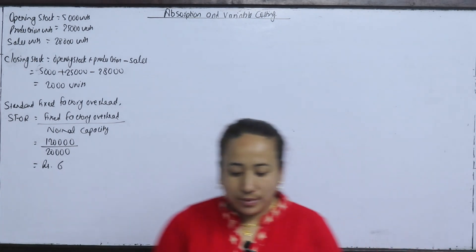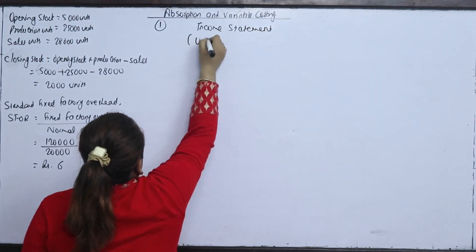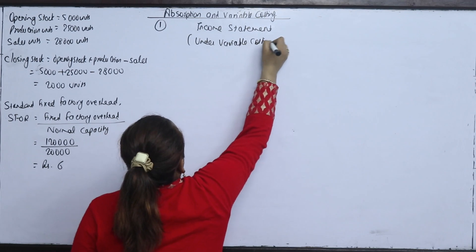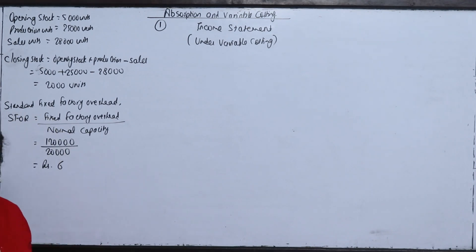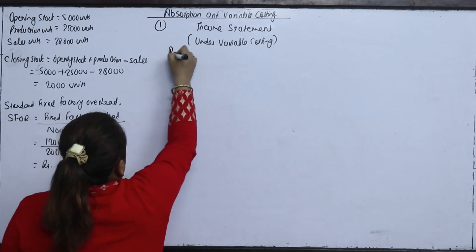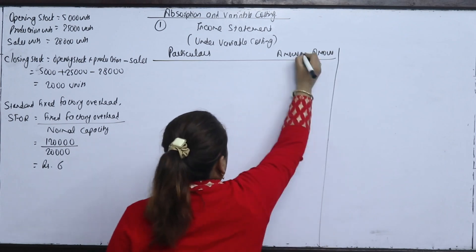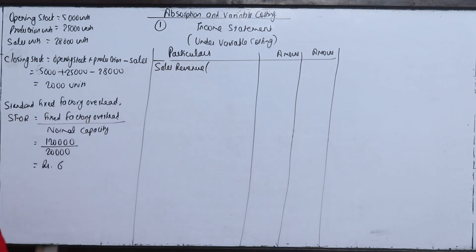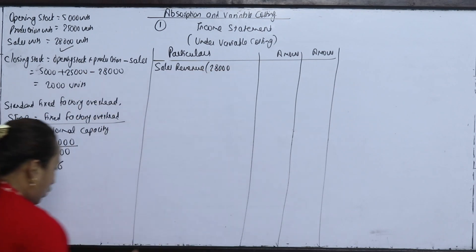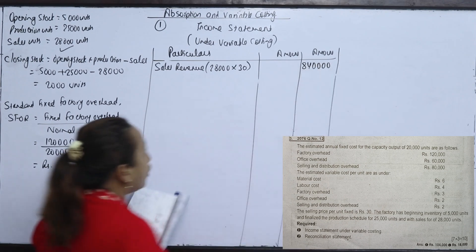Now we prepare the income statement. Under variable costing, costs are separated into variable and fixed. Under absorption costing, costs are separated into manufacturing and non-manufacturing. Starting with the income statement: sales revenue = 28,000 units × Rs. 30 = Rs. 8,40,000.